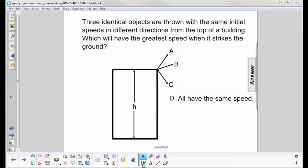We can just look at this and realize that at the top here, they all have the exact same gravitational potential energy, and they all leave with the same kinetic energy. By the time they get to the bottom, they will have no gravitational potential energy. It will all be kinetic, so it looks like they should all have the same speed.